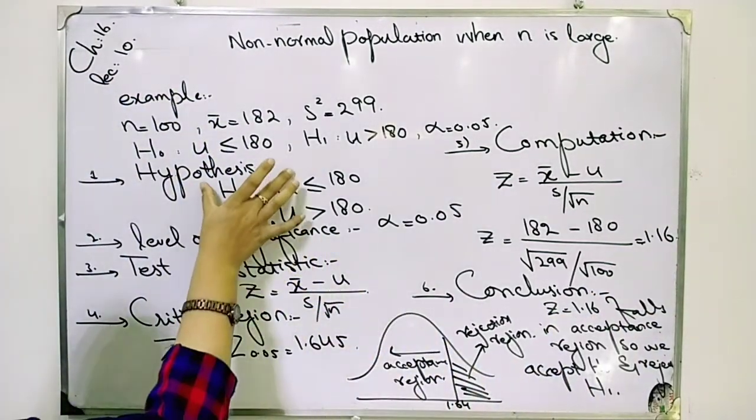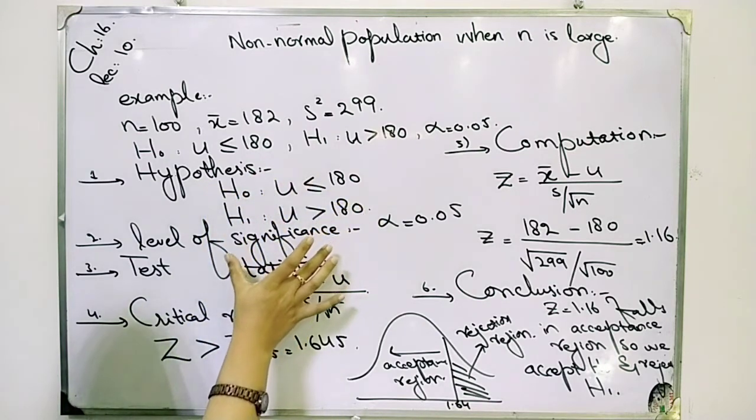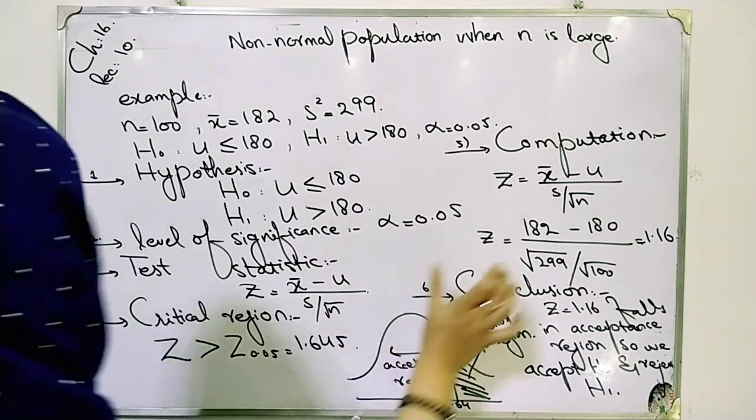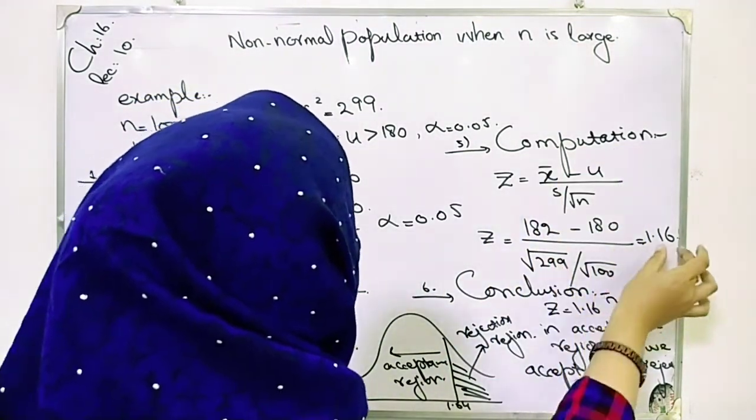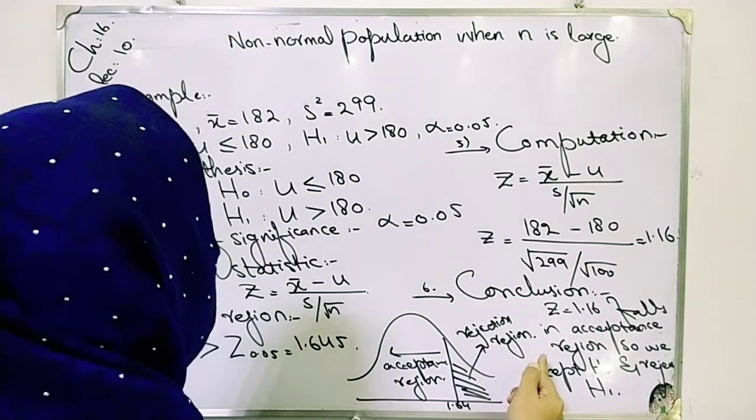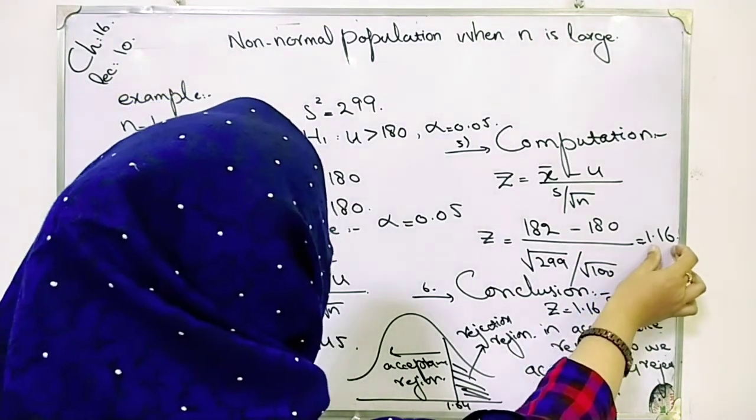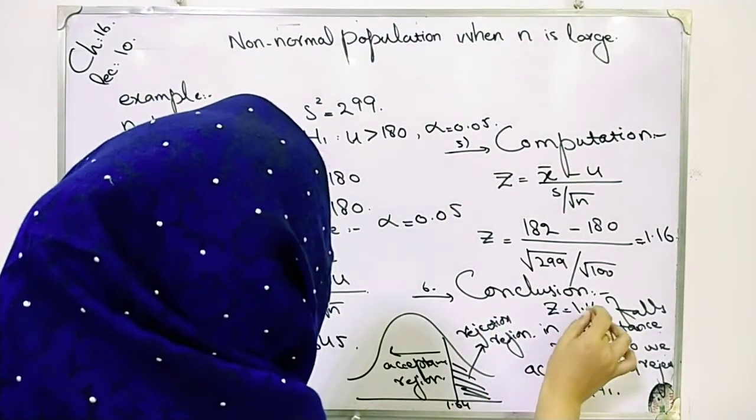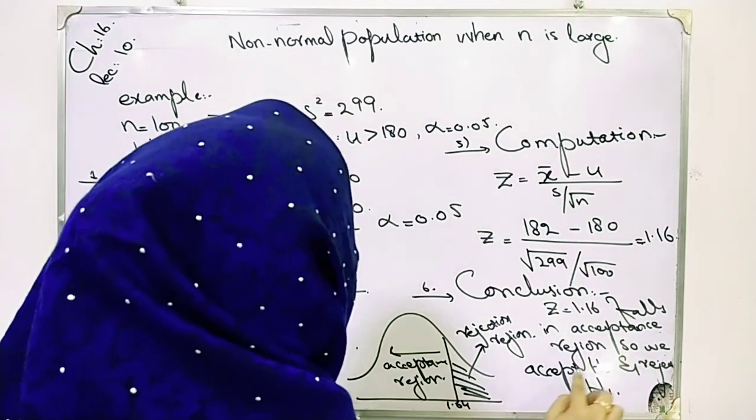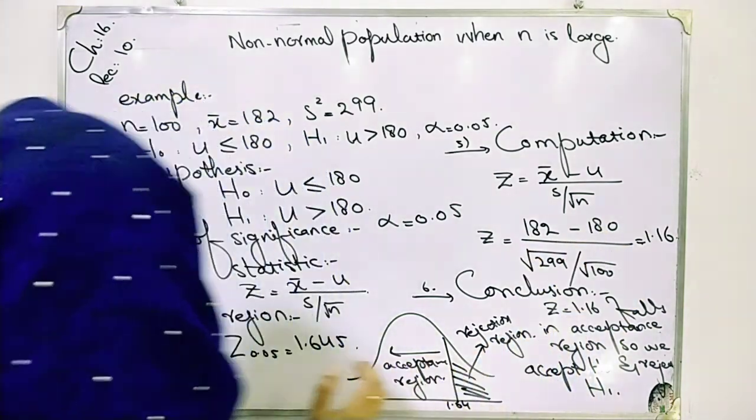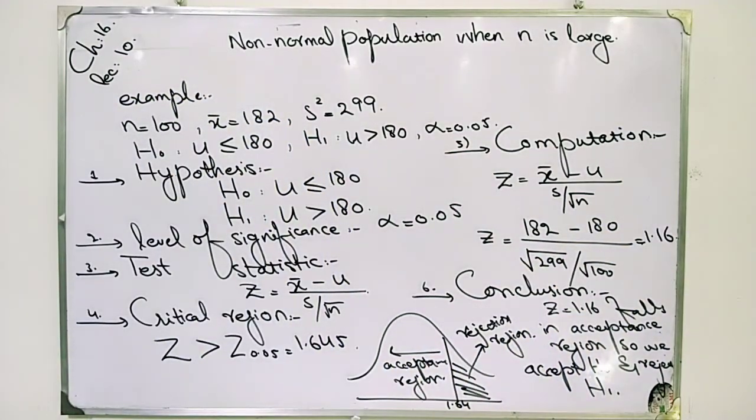Students, there are 4-6 steps: hypothesis, level of significance, test statistics, critical region (one-sided), computations giving 1.16, and conclusion. If values lie in rejection region, reject H0. If lying in acceptance region, accept H0. This is for non-normal population when n is large. I hope you like my lecture. If you have any problem, discuss in the comments. God bless you.